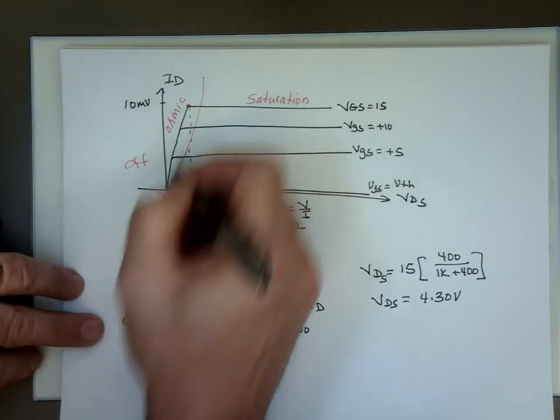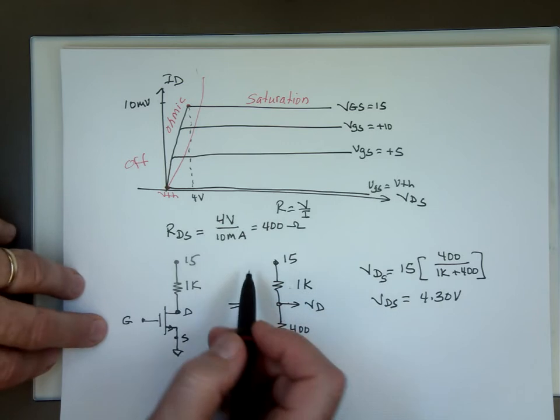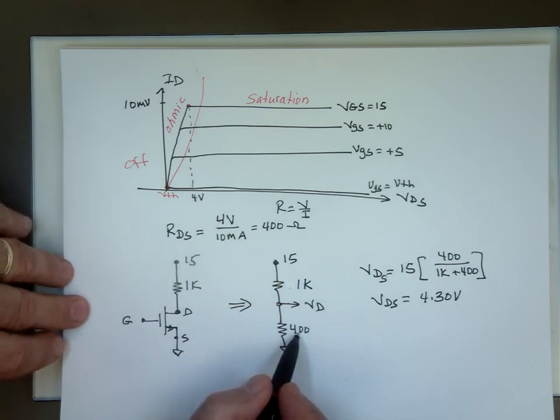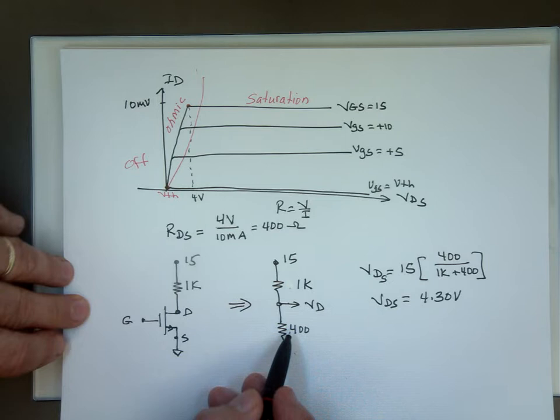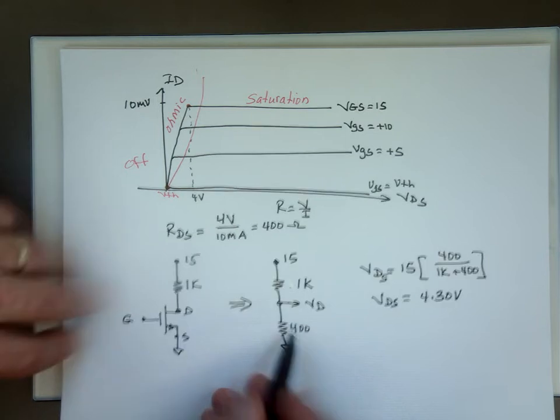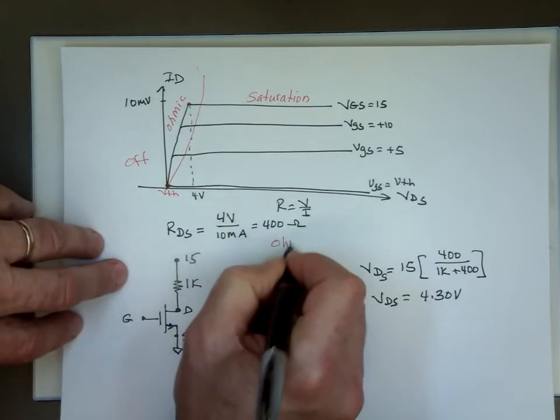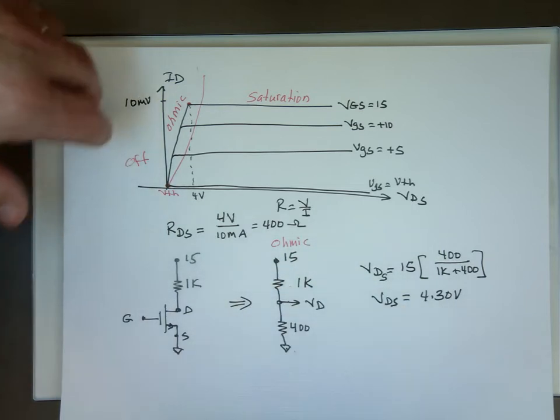So when you're in this section here, the MOSFET is treated as a resistor of 400 ohms. So when you look at your circuit, it will look like this if you are in the ohmic region. And you can say VDS equals 4.3 volts.